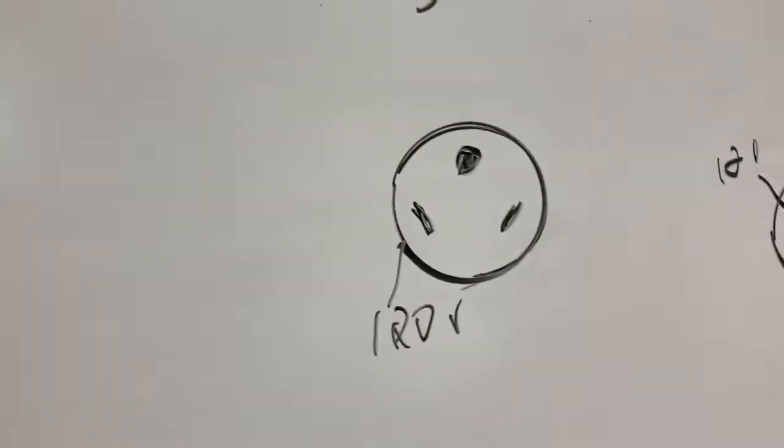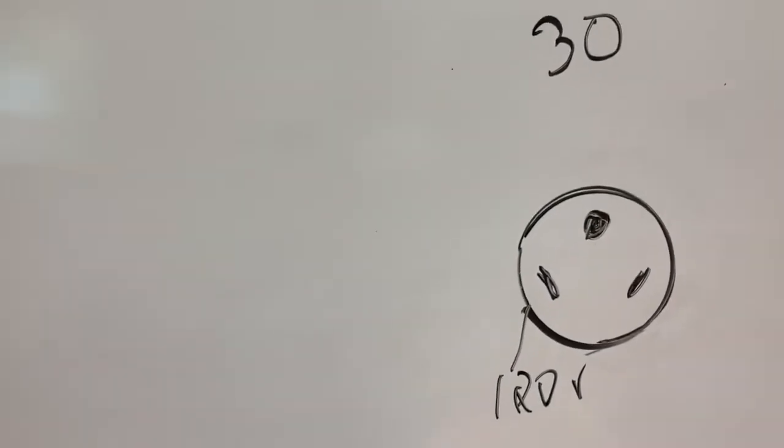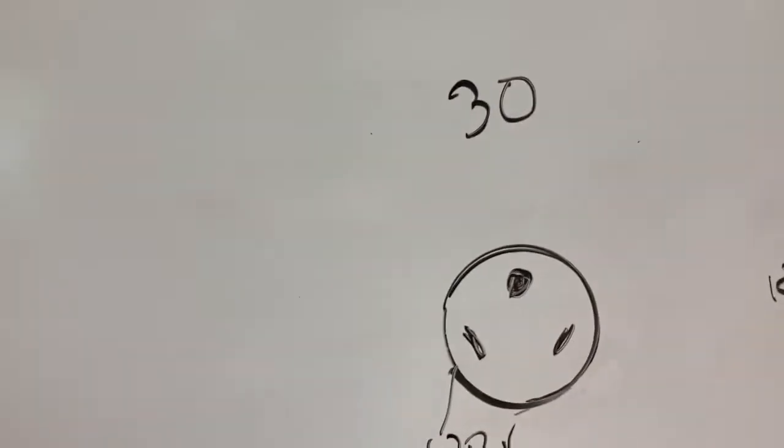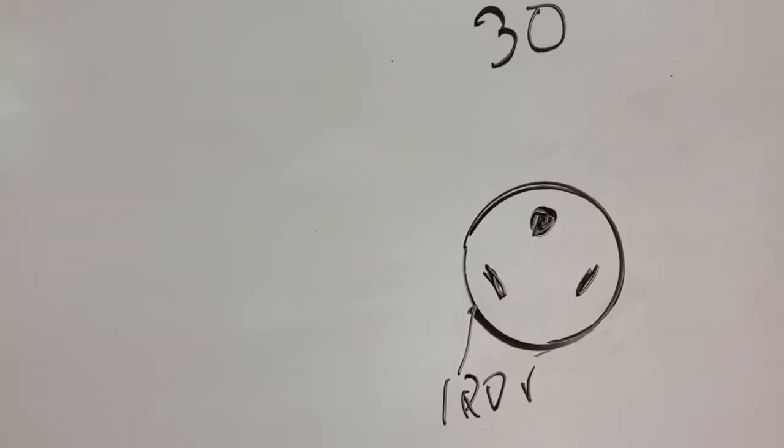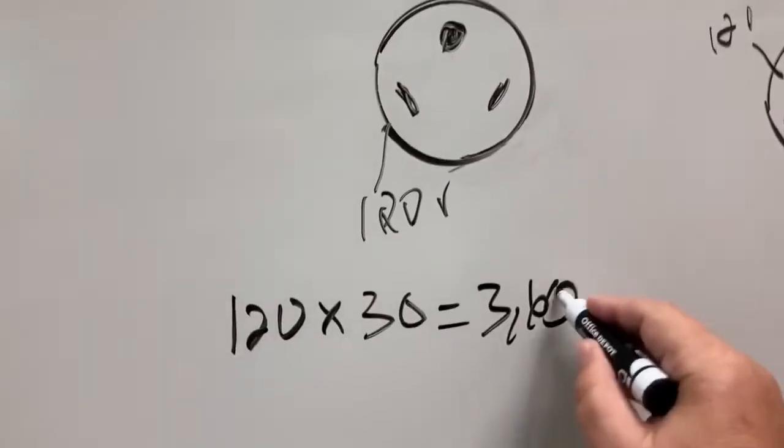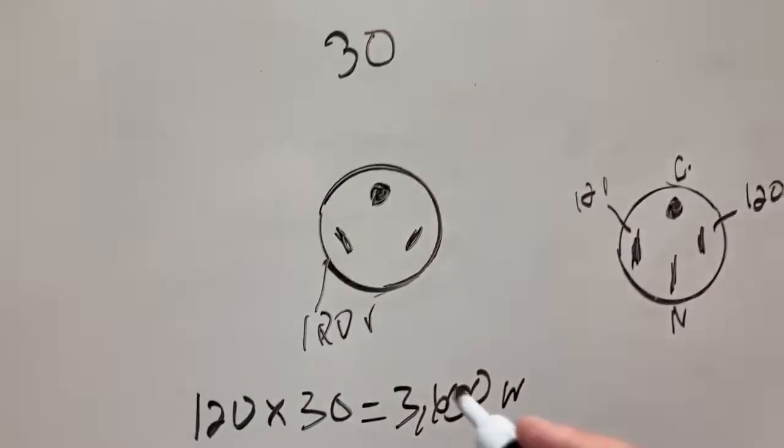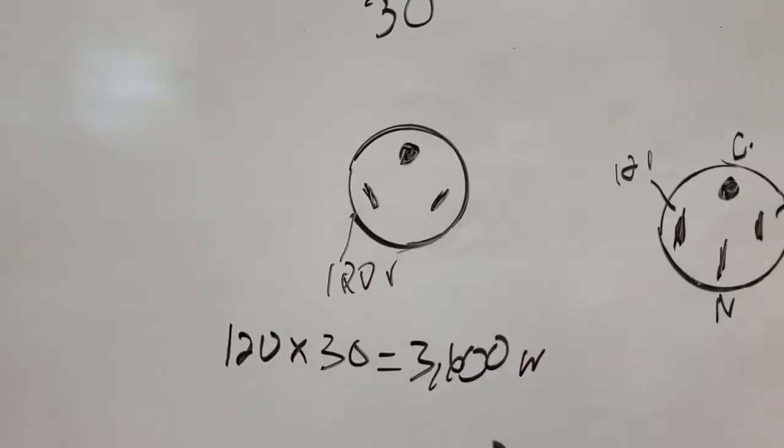So if you want to figure out the power for each one, right? So you take the 120 volts times the 30 amps and that gives you 3,600 watts. That's what that plug-in can pull before the breaker trips.